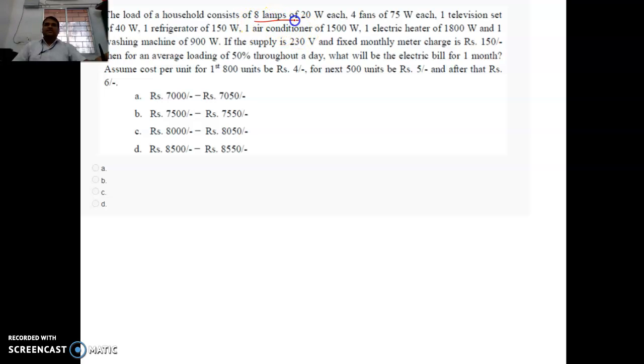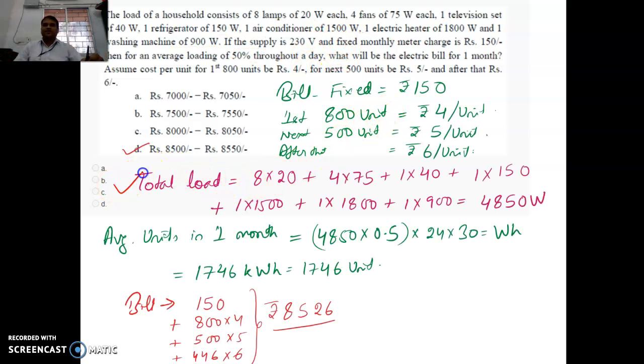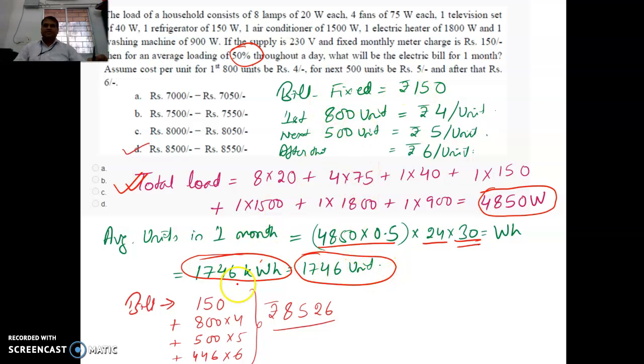Here you have been asked the energy, total energy that is consumed in the home. Here is the total energy and 50% of it throughout the day you are using. So first find out what is the load, 4850 watt is the load. Average unit in one month will be, you are consuming 50%, so 50% of it is the load. For one day, 24 hours. How many days in a month? 30 days. Let us assume 30 days, so you are getting 1746 units. That means 1746 kilowatt hour. For first 500 units, 150 is a fixed price. For first 800 units, you have 4 rupees. For next 500, 5 rupees. And then rest 446 is 6 rupees. Total amount consumption is 8526. The answer is D.